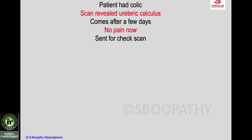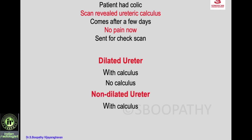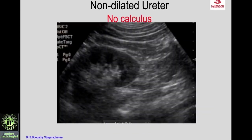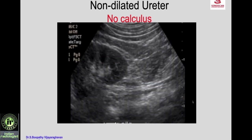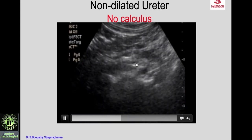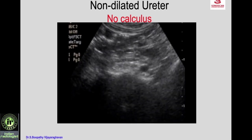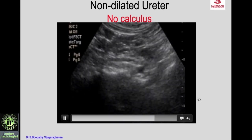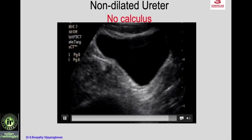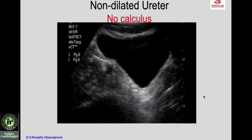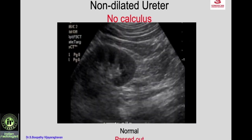Another example: a patient had colic, scan revealed ureteric calculus, comes back after a few days with no pain — sent for a check scan before ureteroscopy. Possibilities include: dilated ureter with or without calculus, non-dilated ureter with or without calculus, or a small calculus in the urinary bladder. In this scenario: no hydronephrosis; tracing the ureter — upper, mid — no calculus; going through the urinary bladder to the lower ureter — still no calculus. You see the peristalsis of the ureter, confirming it is the ureter. The calculus has been passed out.